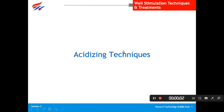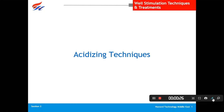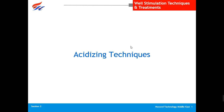Welcome back to the class of Reservoir Production Engineering. Today's topic is about acidizing techniques. In the previous lecture we discussed that there are various ways that formation can be damaged, and this formation damage has to be controlled or reduced. We have two techniques: acidizing and hydraulic fracturing. These are the two ways we can reduce formation damage inside the formation or near the wellbore. Today we are going to discuss the acidizing technique and see how it works.